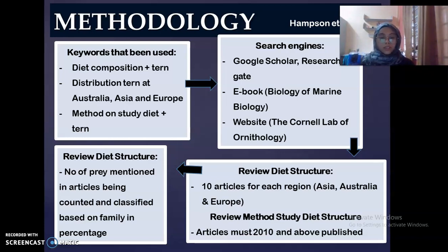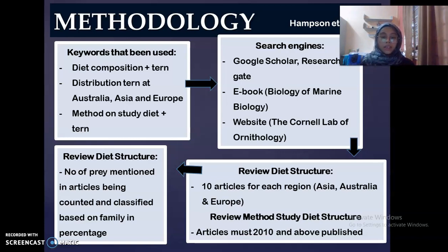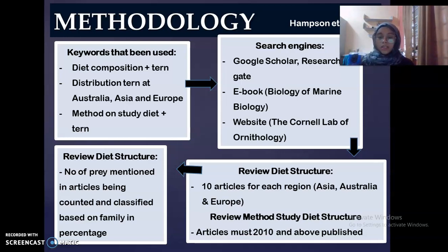For the review of diet structure, I picked 10 articles for each region, while for reviewing methods to study diet structure, I picked articles published from 2000 and above. For the analysis, the number of prey items mentioned in each article was counted and classified based on family in percentage.